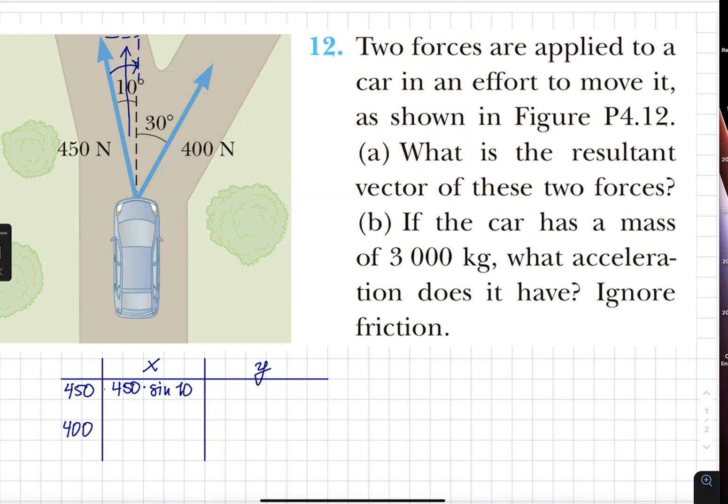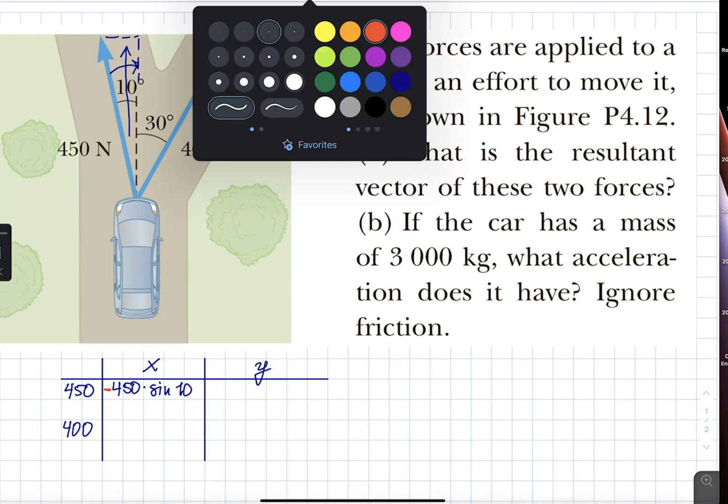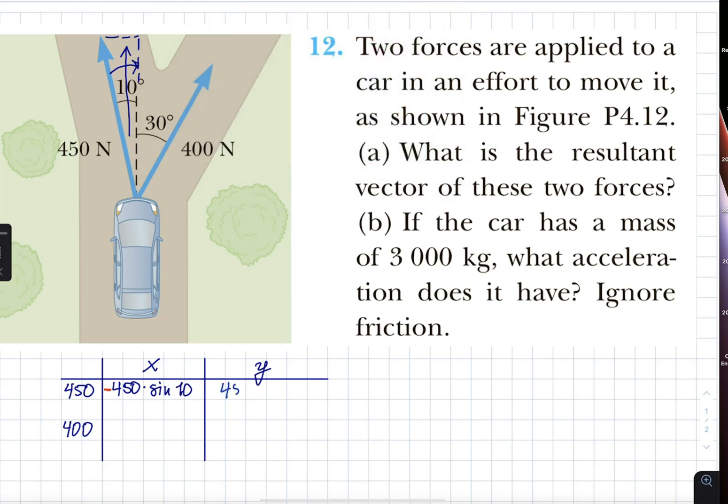And it's going to be negative, mind you, because it's to the left. Don't forget, if it's left or down, it's going to be negative. Then 450 cosine 10, and it's upward, so it's positive.